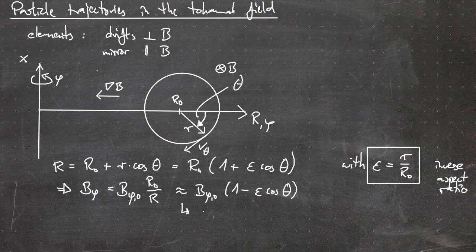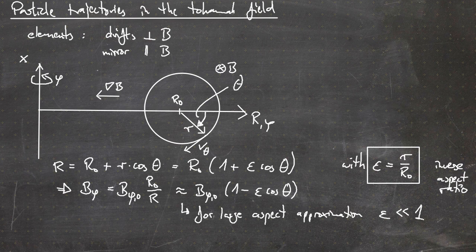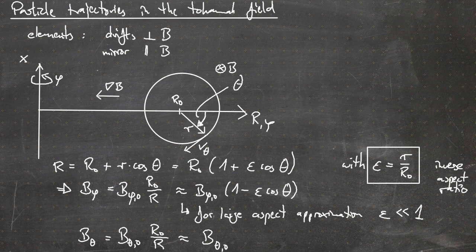This Taylor expansion is a good approximation for a large aspect ratio device — the large aspect ratio approximation — which means epsilon, the inverse aspect ratio, is supposed to be small. The same can be done for the poloidal magnetic field component, giving B_theta naught times one minus epsilon cosine of theta. Keep in mind that in a typical tokamak, the poloidal magnetic field is much smaller than the toroidal magnetic field.